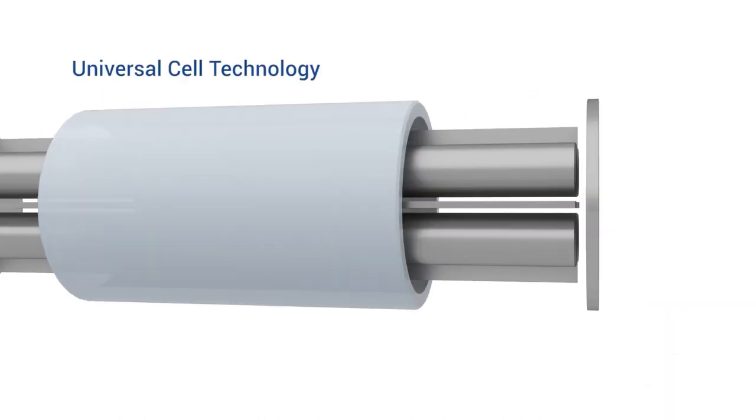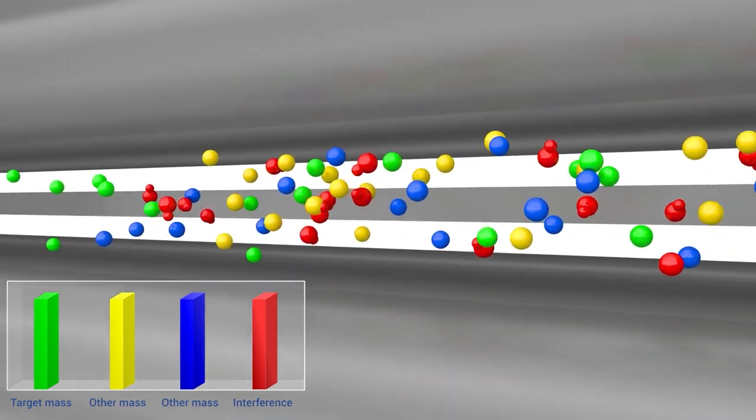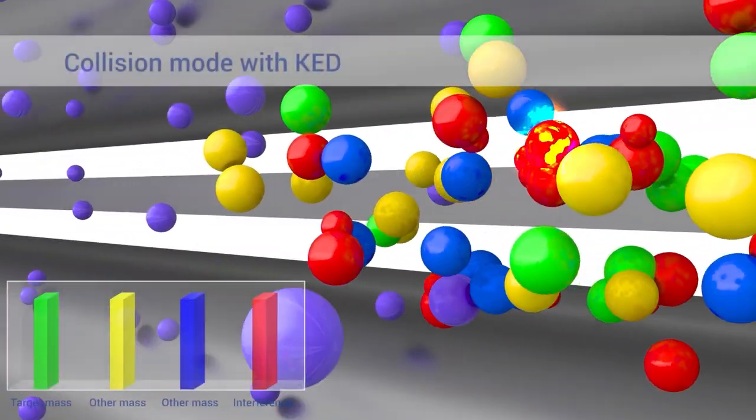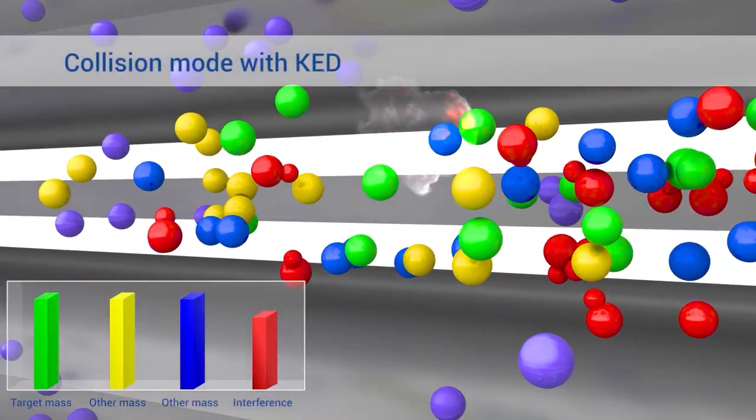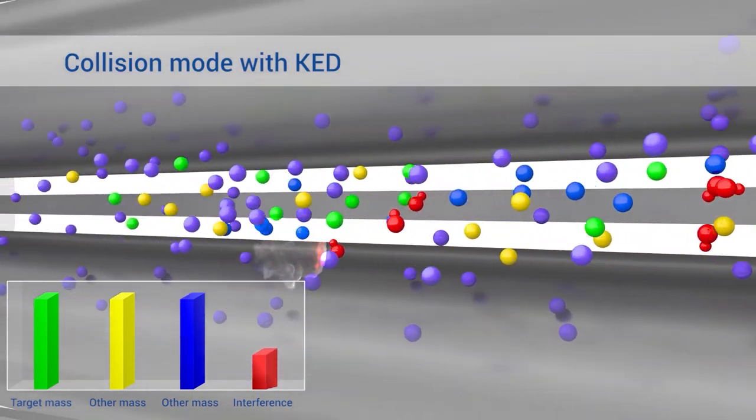At the heart of the NexION 2200 is its proprietary quadrupole universal cell, which performs two different tasks. It can operate in collision mode with non-reactive gases, employing kinetic energy discrimination technology.